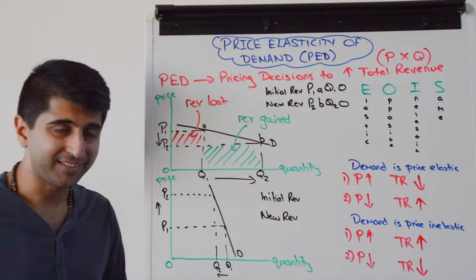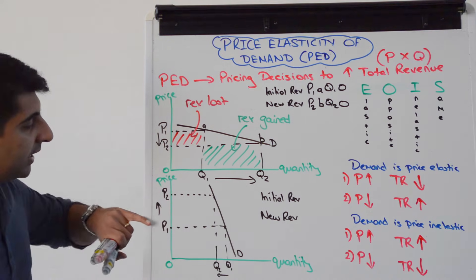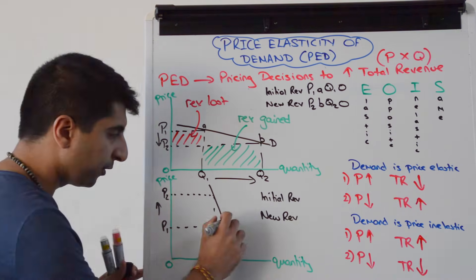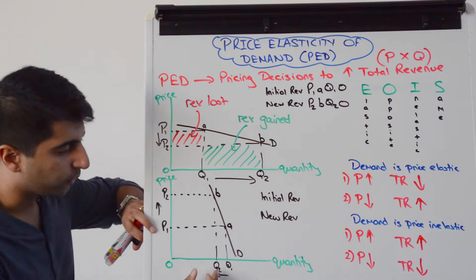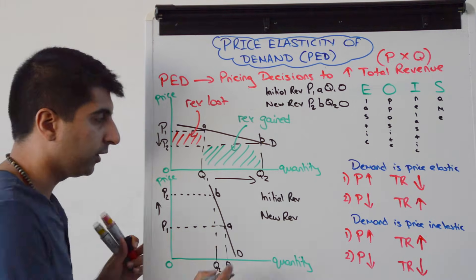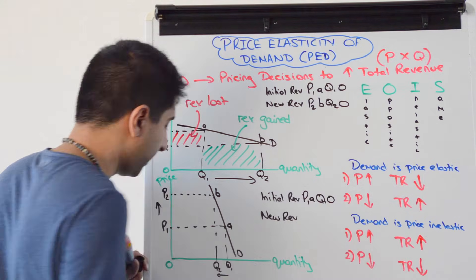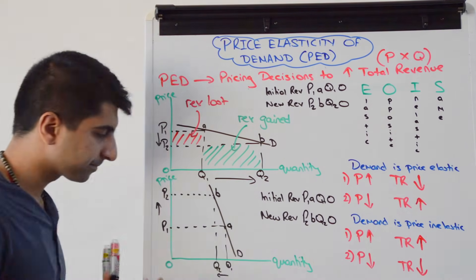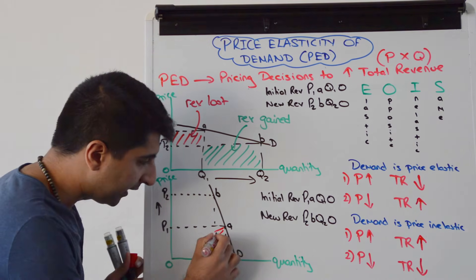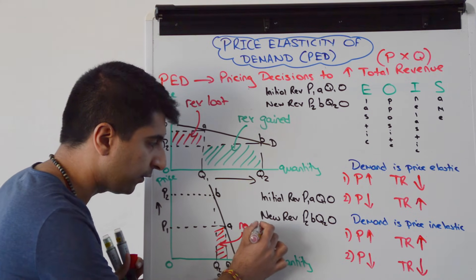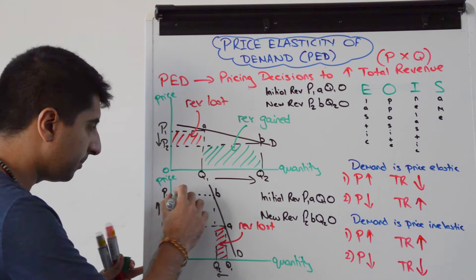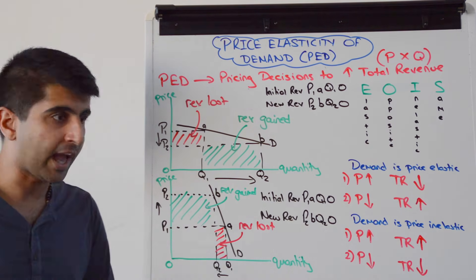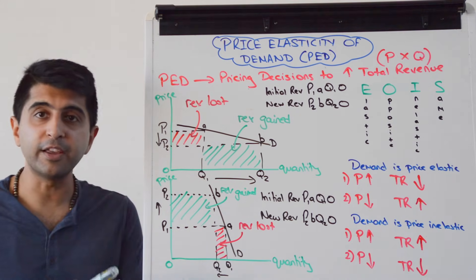We'll prove the same when demand is price inelastic — where the price should be increased to raise total revenue. At price P1, quantity Q1 is being sold, so initial revenue is P1 times Q1, giving area P1AQ10. When the price is raised, new revenue is P2 times Q2 — area P2BQ20. The revenue lost is only a small amount, while the revenue gained is a massive green box. The revenue gained significantly outweighs the revenue lost, confirming that when demand is price inelastic, raise price to increase total revenue.